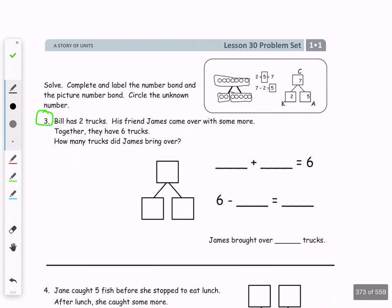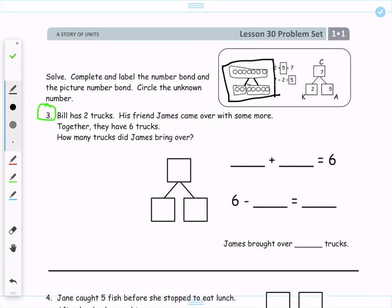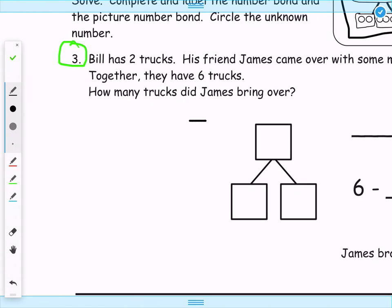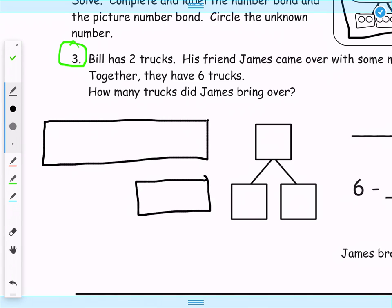Now, looking at number 3, we see that we're supposed to be making our own picture number bond, kind of like this one right here. So they supplied it for us in the other two problems, but they didn't supply it for us here. So we should probably start by going ahead and drawing that. So let's come over here and we draw our whole and one of our parts and another part. And, of course, we need to connect them to make a proper number bond.